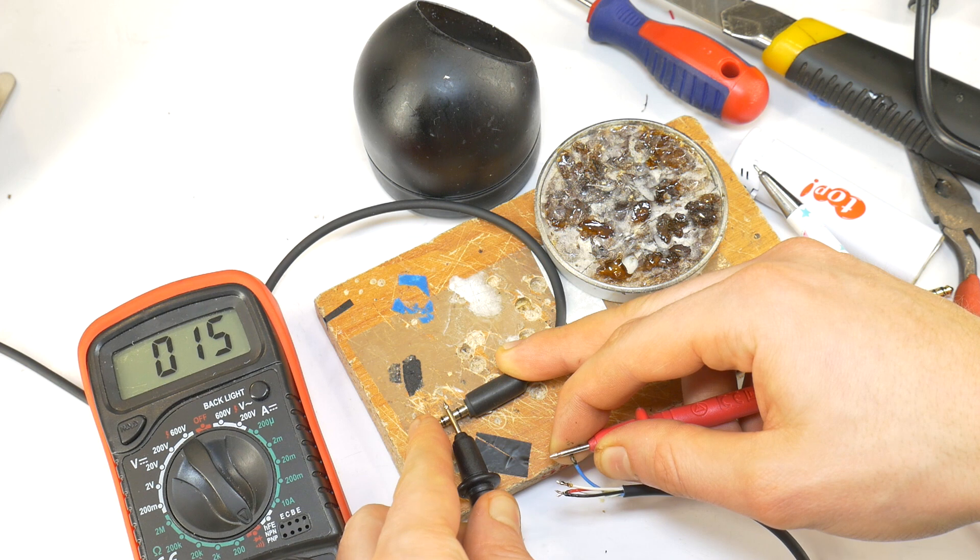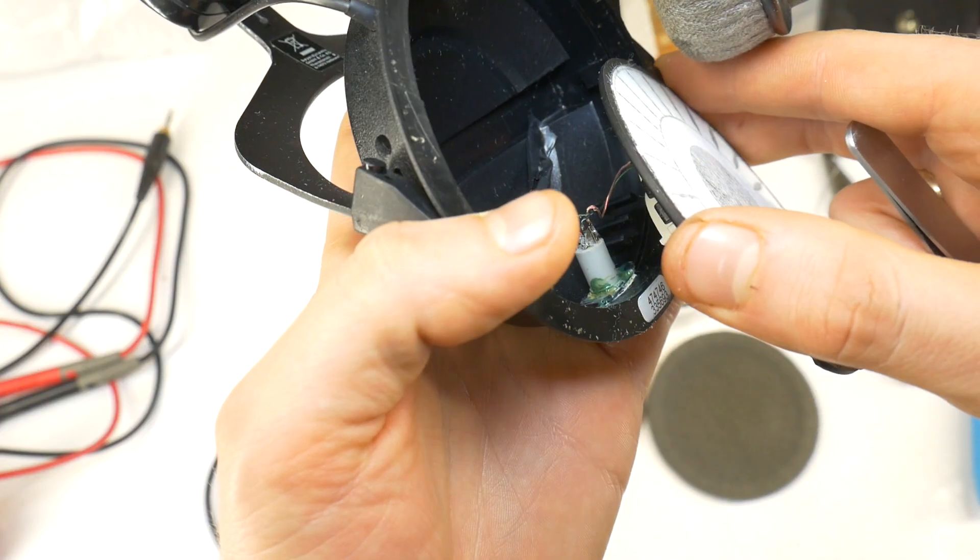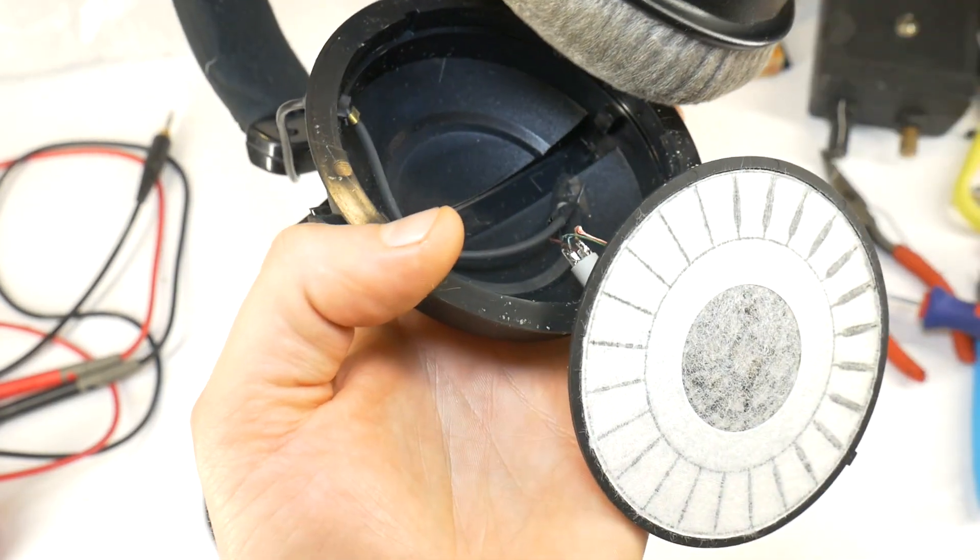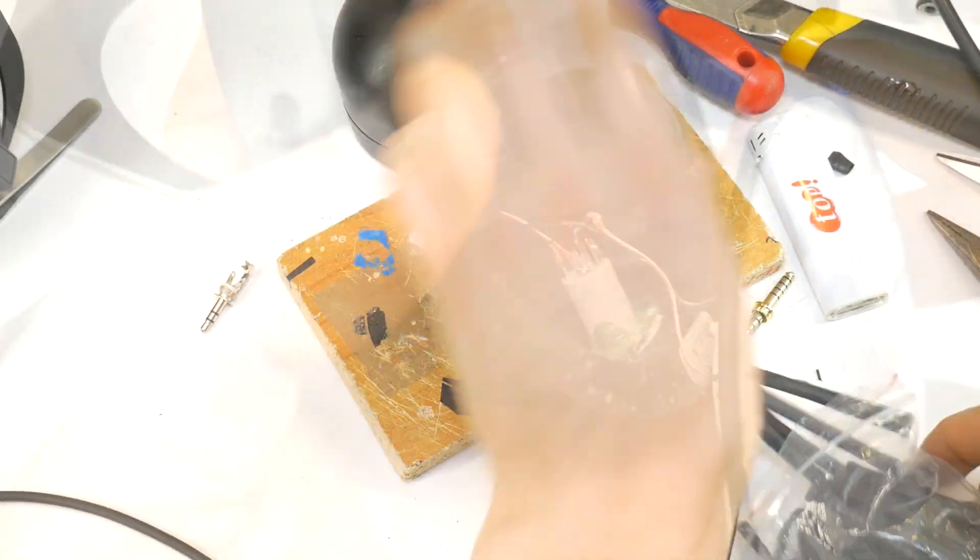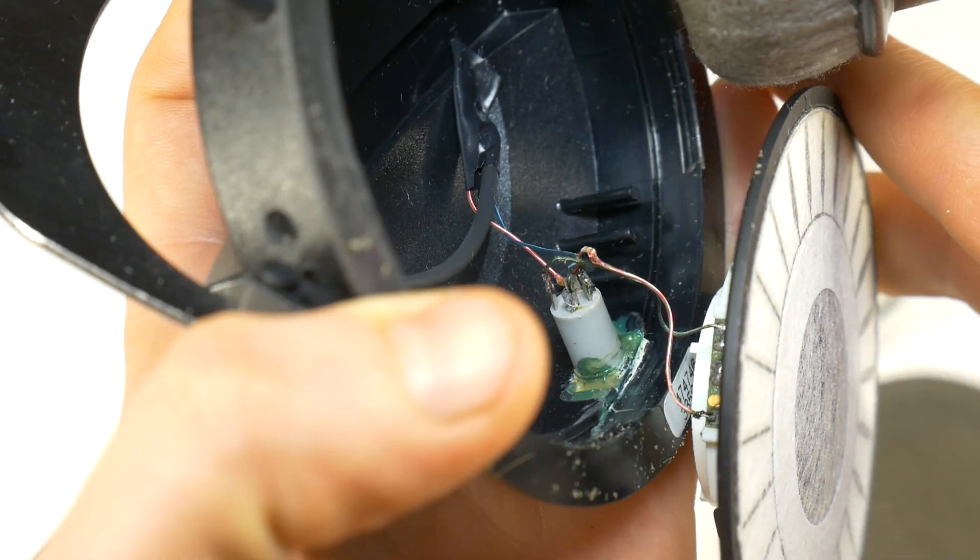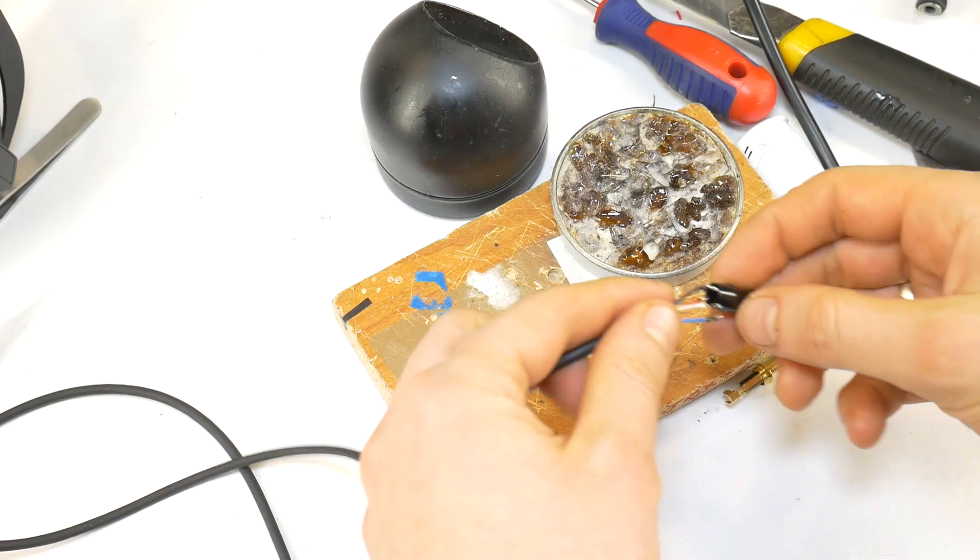Then, with the help of a multimeter, or by looking inside the headphones at the wire diagram, find out which wire colors are left plus, left minus, right plus, and right minus. This is essential in order to make a correct balanced headphone cable.